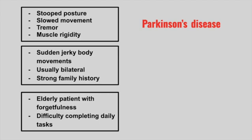Next is a patient with sudden jerky body movements. It's usually bilateral and there is a strong family history. This is Huntington's disease. In this disease the caudate nucleus is atrophied and there is a loss of GABA.